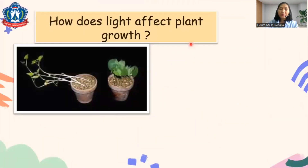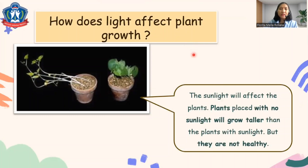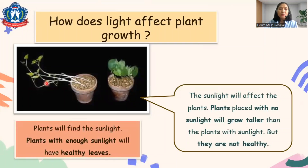How does light affect plant growth? In this observation, plants are placed in different places. Plants placed with no sunlight will grow taller than plants placed with sunlight, but these plants are not healthy. Plants will find the sunlight, and plants with enough sunlight will have healthy leaves. You can see the difference — here are yellow leaves, but here are green leaves.